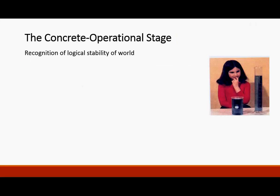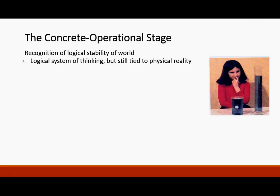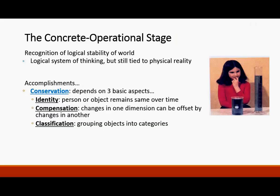In the concrete operational stage, there's recognition of the logical stability of the world. Children understand patterns and the law of conservation — whether a tall beaker or a shorter, wider beaker, the amount is the same. There's a logical system of thought, but still tied to physical reality. Conservation depends on three aspects: identity (the object remains the same over time), compensation (changes in one dimension can be offset by changes in another — even though it's shorter, it's wider), and classification (grouping objects into categories, which children do quite well in this stage).